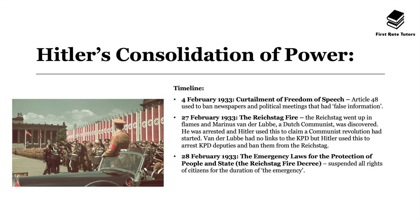On 27th February 1933, there was the Reichstag fire. Nobody exactly knows historically who set this fire off; however the Reichstag went up in flames and Marinus van der Lubbe, a Dutch communist, was discovered there. He was arrested and Hitler used his arrest to claim a communist revolution had started.